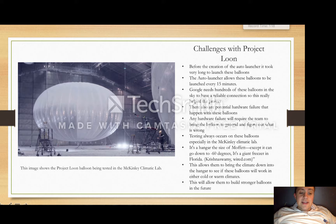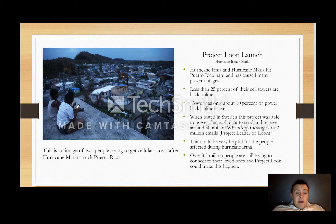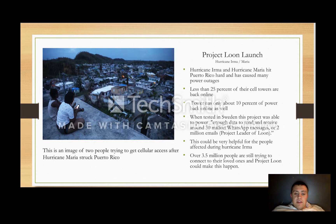We've all heard about Hurricane Irma and Maria — they struck Puerto Rico pretty hard. Project Loon reached out to Puerto Rico to see if they could help, trying to use their balloons to give people access to internet so they're able to get in touch with their loved ones. Recently, the project was able to power enough data to send around 30 million WhatsApp messages or 2 million emails. It really did a good job of allowing people to get access to their loved ones. Over 3.5 million people are still trying to connect, and Project Loon really can make this happen.